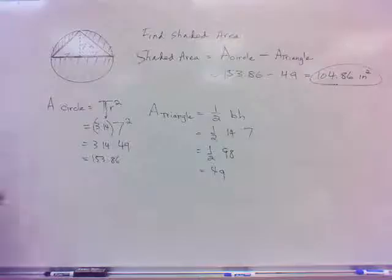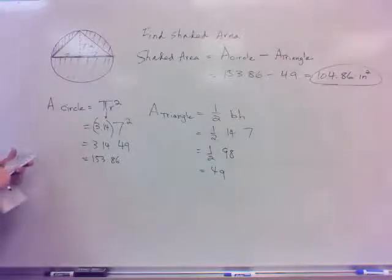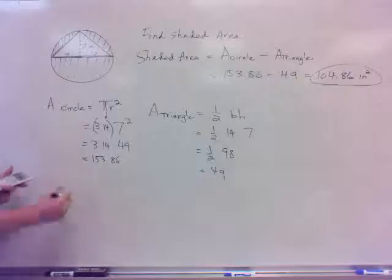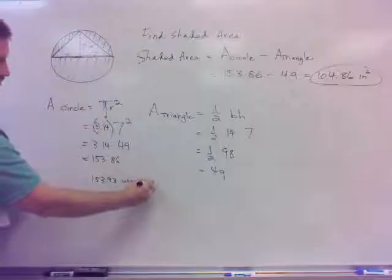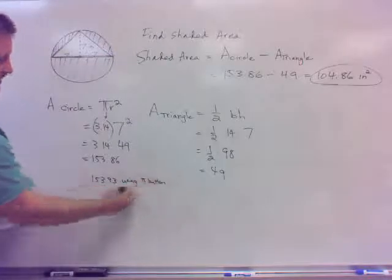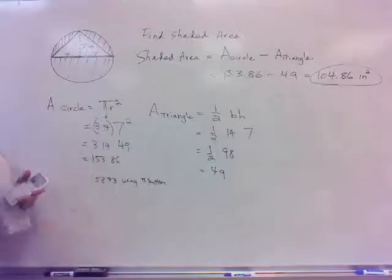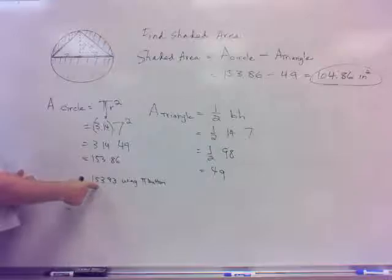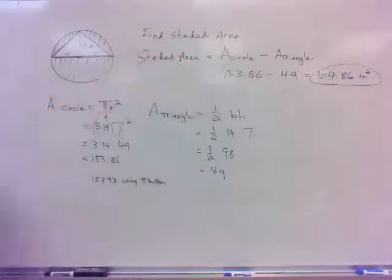Now, the other thing, real quick, note here on that, if I use the pie button on the calculator, let me note there. You get 153.93. So that's what I'm saying, you get a little different answer. It's not, I won't count that wrong, whichever one you use. Because the book uses 3.14. This is probably actually more accurate than 153.93. So that would give you a little different answer, so either one.